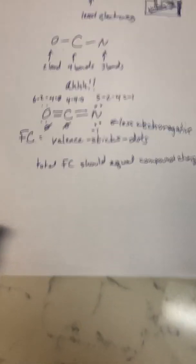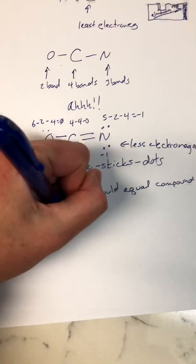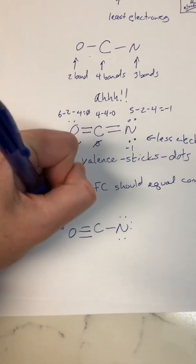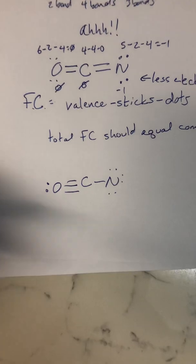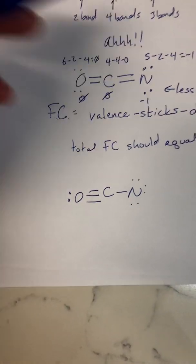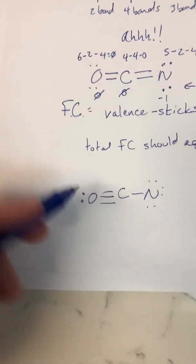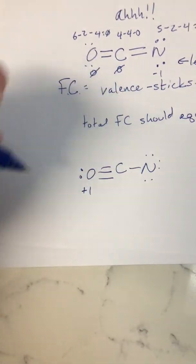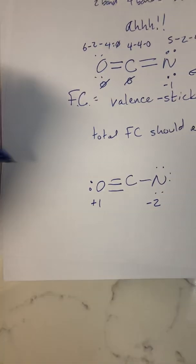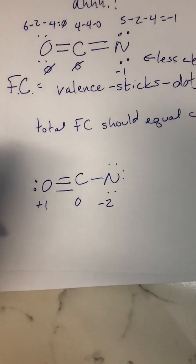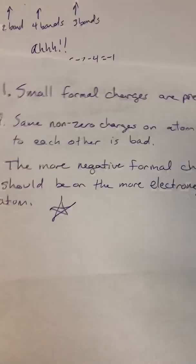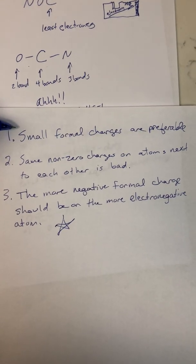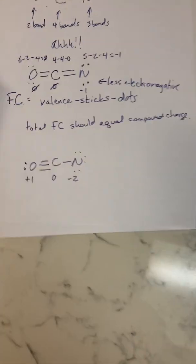You could go to another extreme and draw a structure where everything has an octet and all electrons are filled, but if you look at the formal charge, nitrogen would have a plus one, oxygen would have a minus two, and carbon would have zero. This is not the most stable structure because it doesn't have the smallest formal charges — we know if it's negative one overall, we should be able to get all zeros and only one negative one.